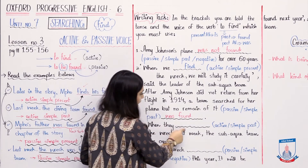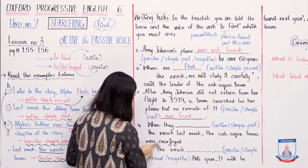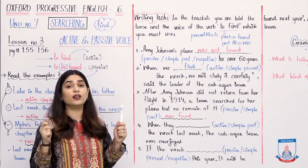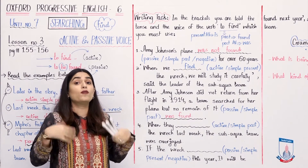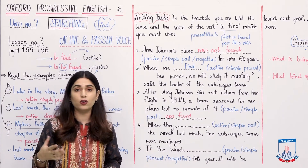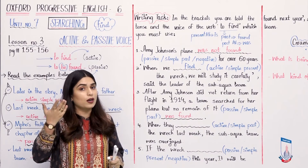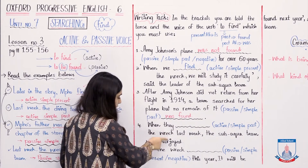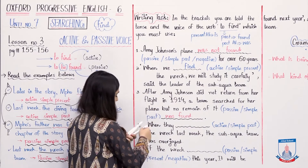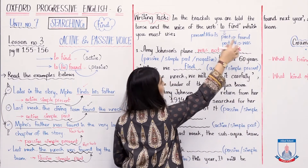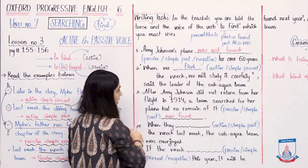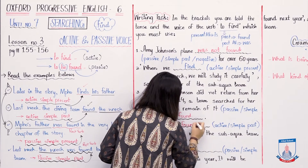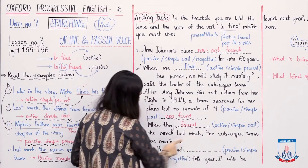Number four: When they found the wreck last week, the sub-aqua team was overjoyed. 'Overjoyed' means expressing extreme happiness and excitement — when you achieve something beyond your expectation, you are overjoyed. For this blank, we need active simple past. For active voice, no auxiliary verb is needed — only the past verb. So: 'when they found the wreck last week, the sub-aqua team was overjoyed.'